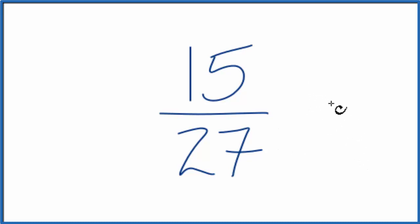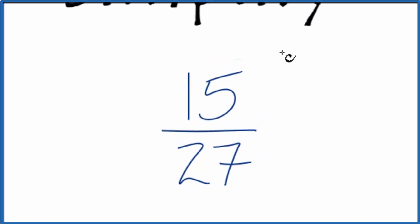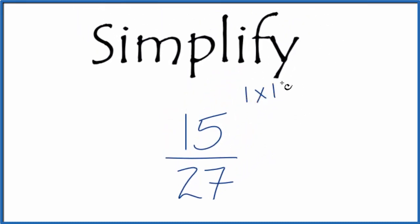To do that, we need to find the greatest common multiple between 15 and 27. So let's list the multiples of 15 and 27. 1 times 15, that equals 15. 3 times 5, but that's about it.